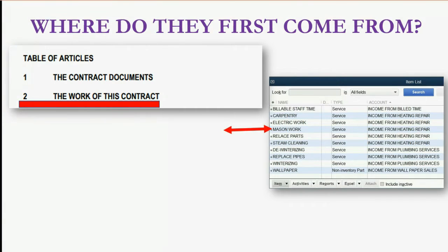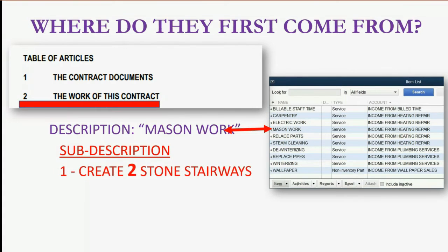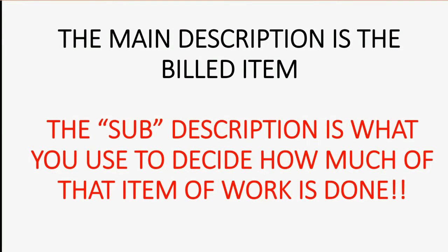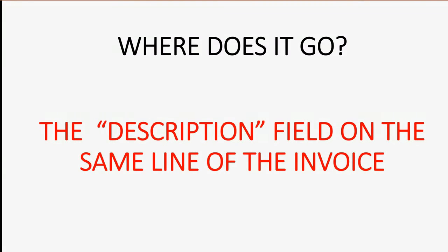For example, "mason work" might be the name of your item and the description of that piece of work in the contract. In the contract, mason work would have a sub-description that clearly explains physically what the person is going to receive from the contractor for that specific item billed as one of the line items on the invoices. The main description is the name of the billed item in the item column of the invoice, but it's the sub-description that you use to decide how much of the work is done.